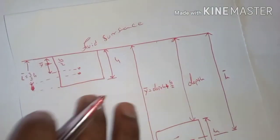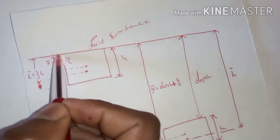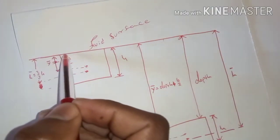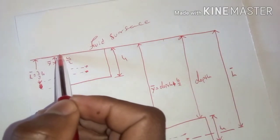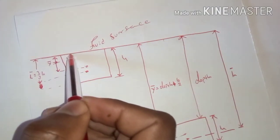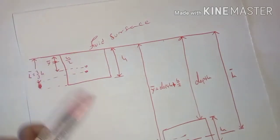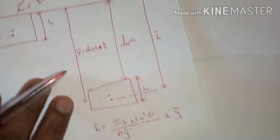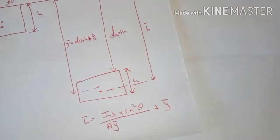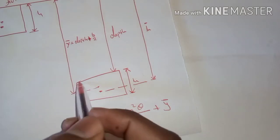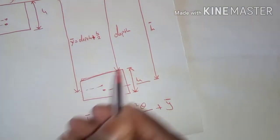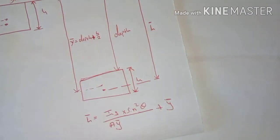Remember the exercise we were dealing with — it was an exercise where the top part of the object is aligned with the surface of the fluid. Now that has changed. We have an object that is completely underwater. How do we deal with that situation?